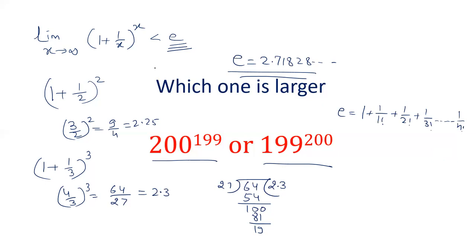The modern result is what? If you keep on increasing the value of x, 1 plus 1 by x power x will always be less than 2.718.